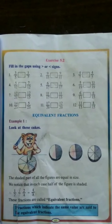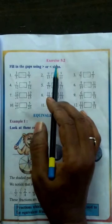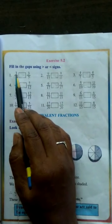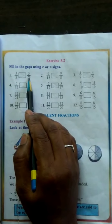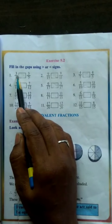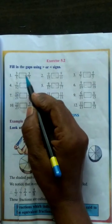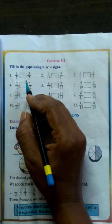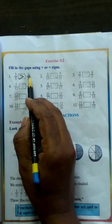Dear children, please open page number 63 in your maths textbook, Exercise 5.2 — Fill in the gaps using greater or smaller signs. First: 3 by 5 and 3 by 7. Numerators are the same but denominators are different. The fraction with the smaller denominator is greater and the greater denominator is smaller. So 3/5 > 3/7.